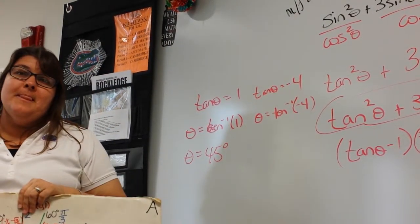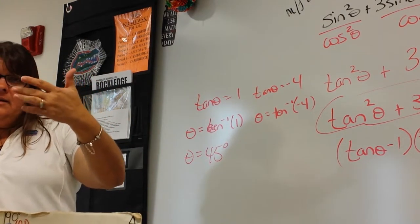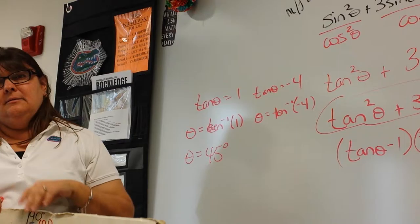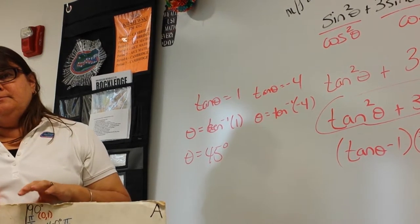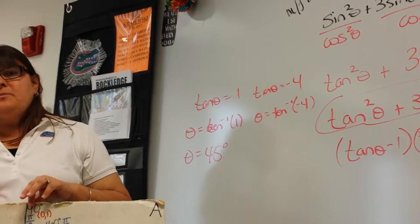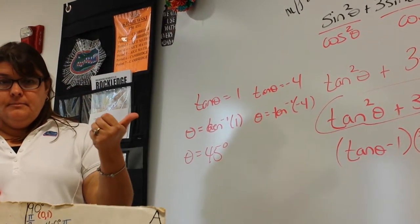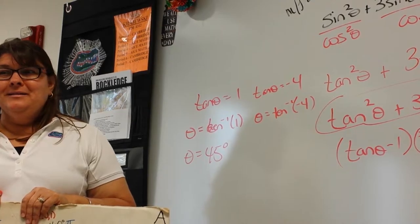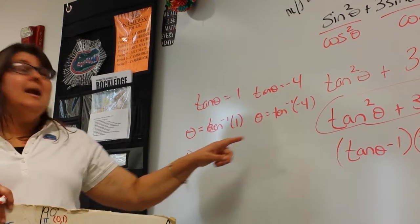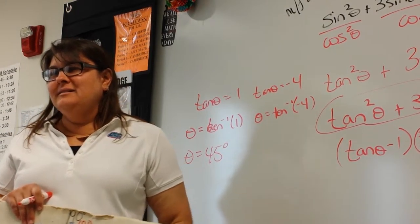Student: How did you know it was 45 degrees? Teacher: Because you do the inverse tan of one on your calculator and it just gives you 45. You want to look at whether it's negative or positive, then see which quadrants apply, and only the numbers from those quadrants matter. It's 180 degrees — that's pretty nice.